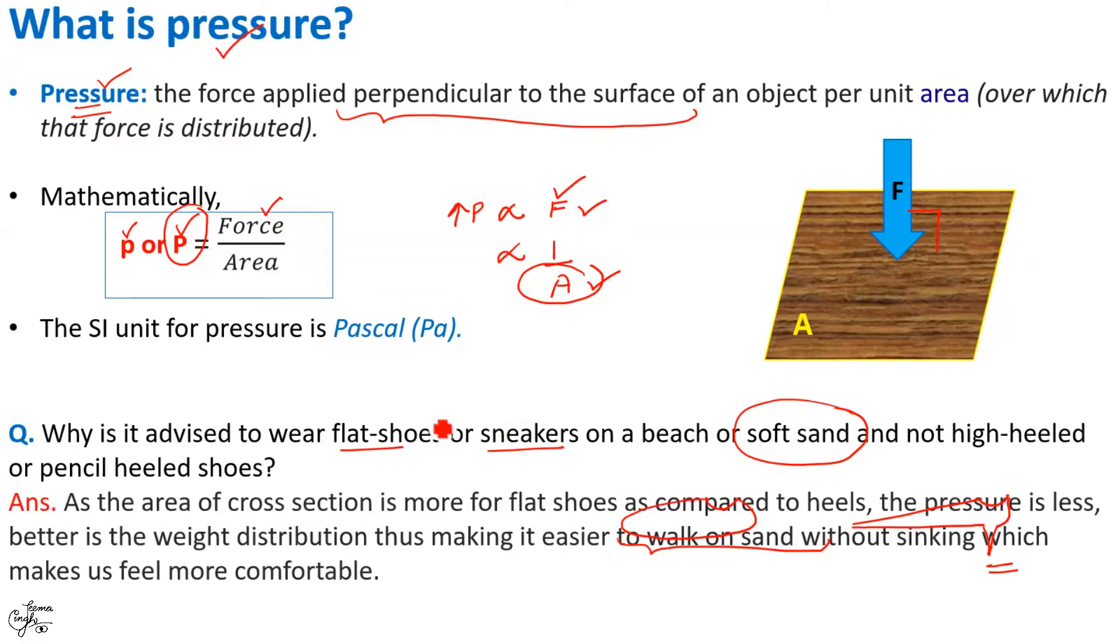Now, the SI unit for pressure is Pascal, which is abbreviated as Pa. This Pascal is equal to 1 N, the unit for force, per square meter, the SI unit for area.